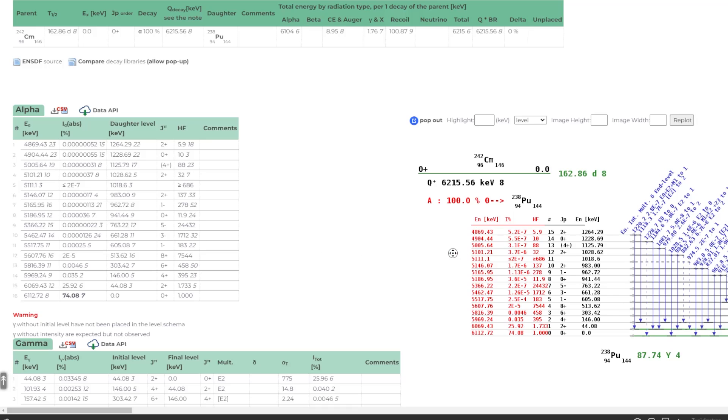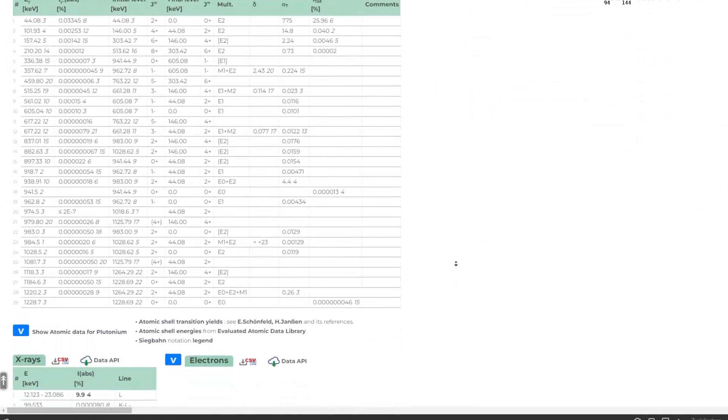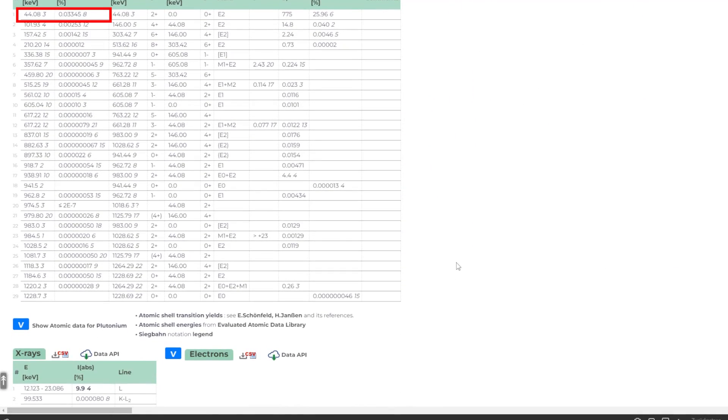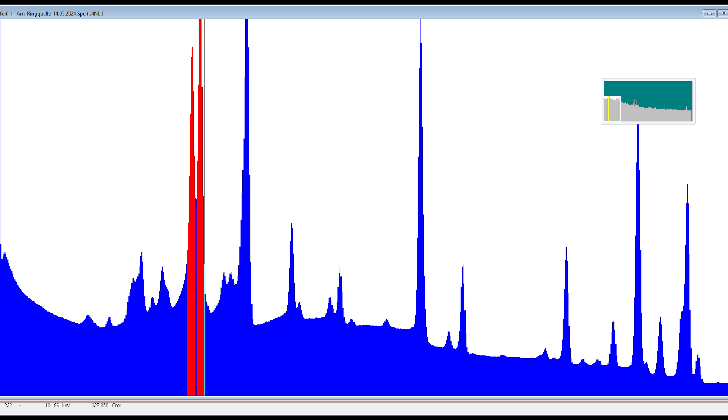So do we see curium-242? Again, it's very shy when it comes to gammas. Only the 44.8 keV line, but that won't be visible. The next hope would be the 101.93 keV line, with 0.00253%, but this could also be easily hidden in that peak, because this peak is due to americium-241.